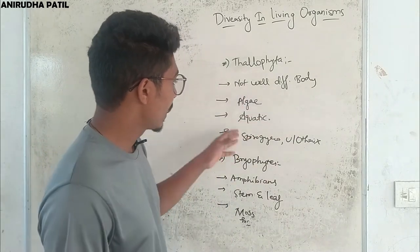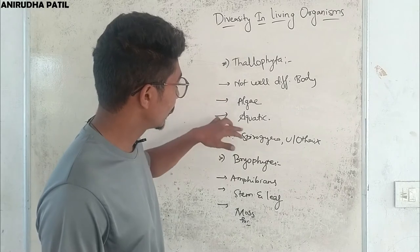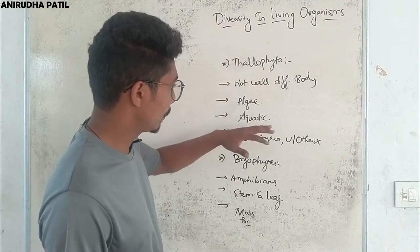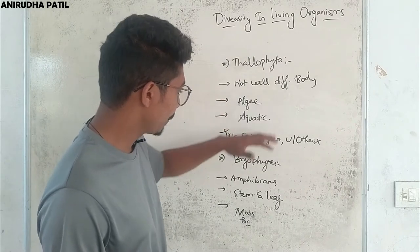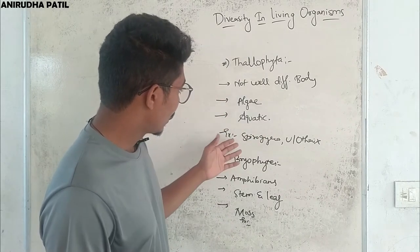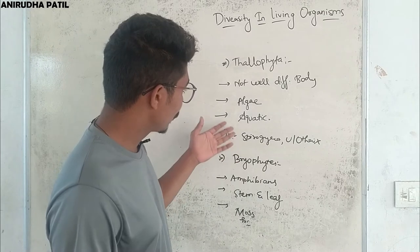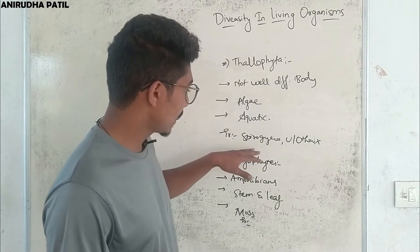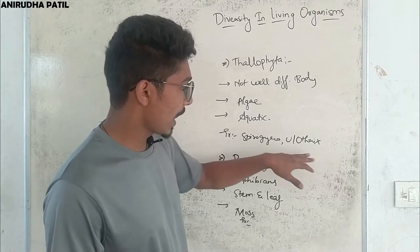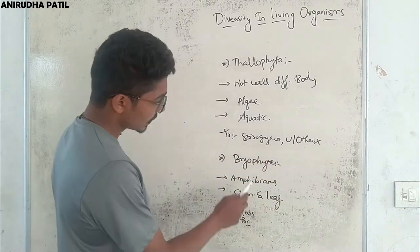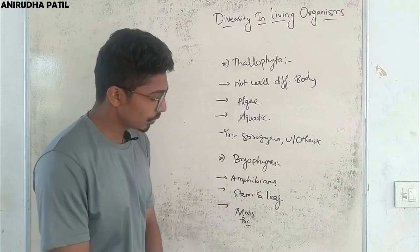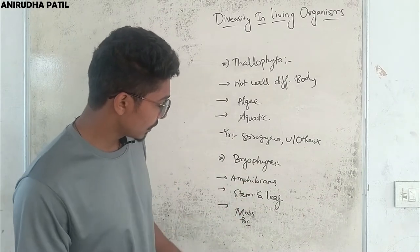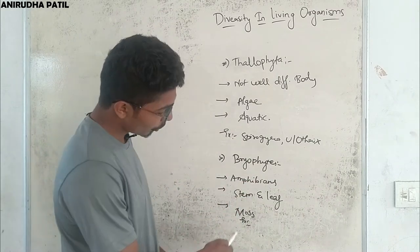Thallophytes have a body that is not well differentiated, and most are aquatic. For example, algae — most thallophytes are algae. Other examples are Spirogyra and Ulothrix.